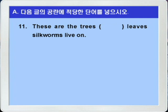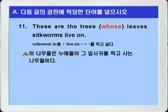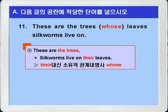11번입니다. 이 문제는 블랭크 바로 뒤에 무관사명사 leaves가 오고 주어로 silkworms, 동사 live on, 이런 어순이 나오니까 소유격 관계대명사 whose를 쓰면 되겠습니다. 해석해보면 silkworm은 누에, live on은 뭐를 먹고 살다라는 뜻이니까 'These are the trees whose leaves silkworms live on.' 이 나무들은 누에들이 그 잎사귀를 먹고 사는 나무들이다, 이런 말이 되겠습니다.